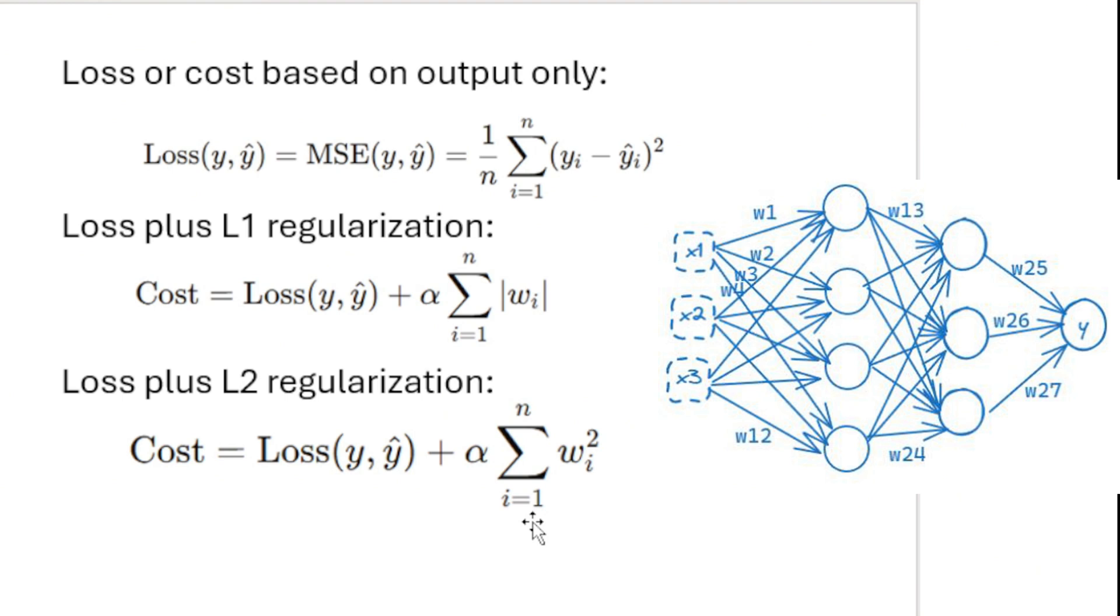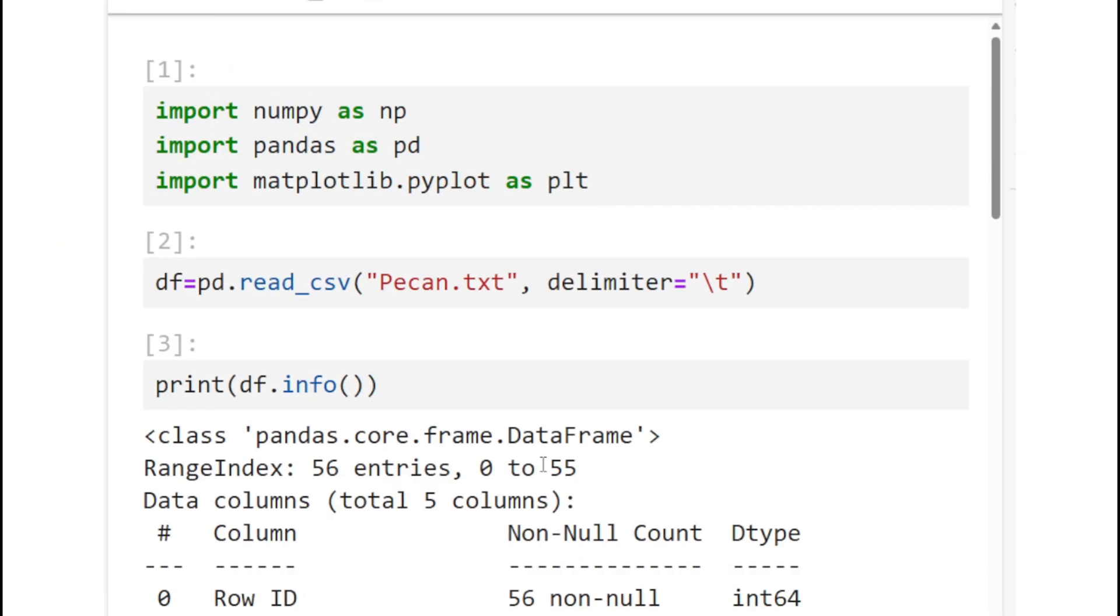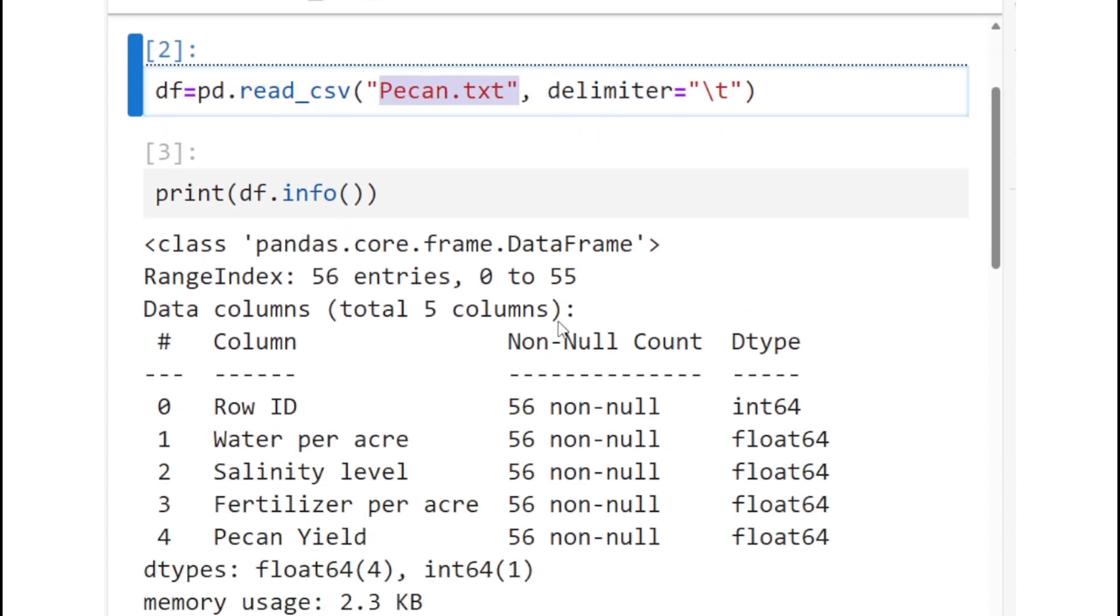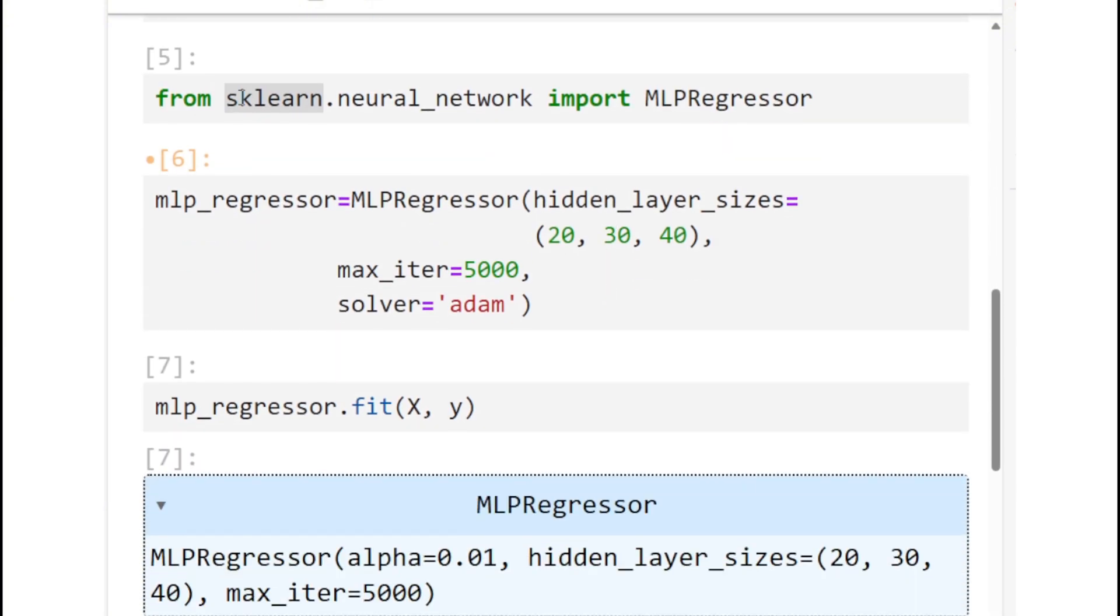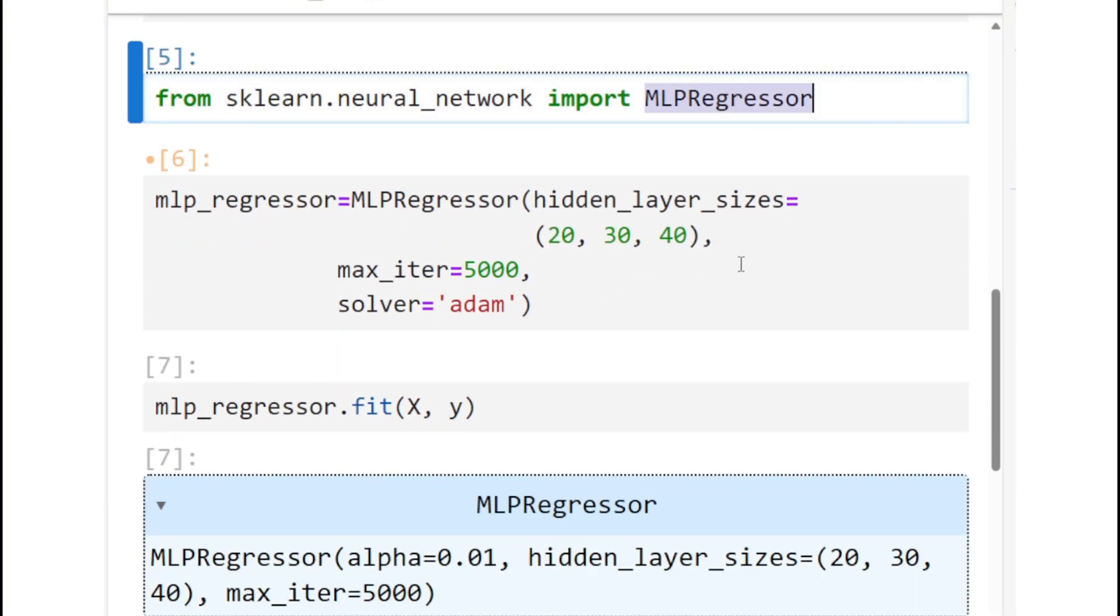So what happens is in L2 regularization, these weights generally do not become exactly 0, but they become lesser than 1. When practically the neural network weights are a little bit more homogeneous rather than very large values greater than 1, the neural network has less tendency to overfit the data. And that's how regularization helps.